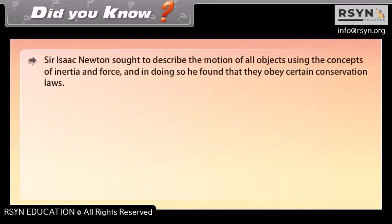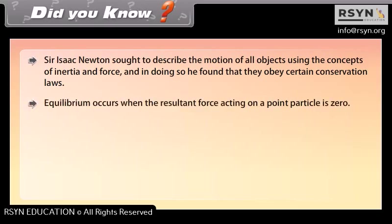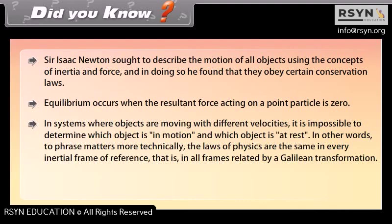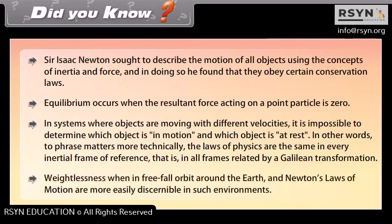Did you know? Sir Isaac Newton sought to describe the motion of all objects using the concepts of inertia and force, and in doing so he found that they obey certain conservation laws. Equilibrium occurs when the resultant force acting on a point particle is zero. In systems where objects are moving with different velocities, it is impossible to determine which object is in motion and which object is at rest. In other words, the laws of physics are the same in every inertial frame of reference, that is, in all frames related by a Galilean transformation. Weightlessness when in free fall orbit around the earth and Newton's law of motion are more easily discernible in such environments.